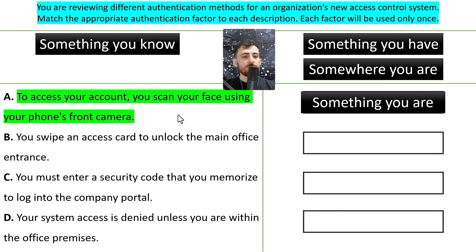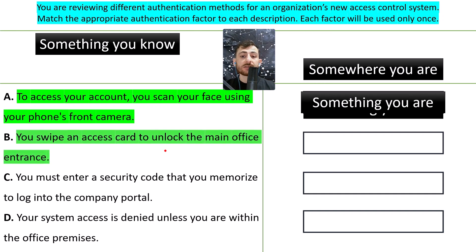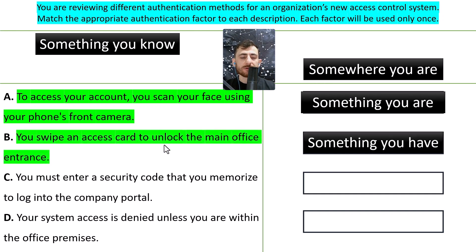How about B: You swipe an access card to unlock the main office entrance. It's an access card that you have, thus it is something you have.